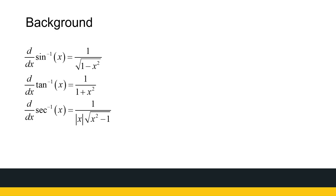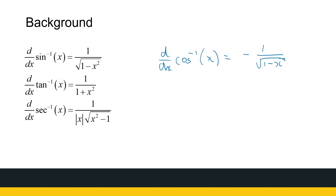As a reminder, there are three derivatives of inverse trigonometric functions you need to be familiar with. One obvious one that's not listed is the derivative of inverse cos of x, but that is simply negative the derivative of inverse sine of x. So when integrating, we only need to consider sine, since inverse sine and inverse cosine differ only by a constant.